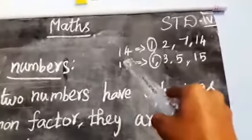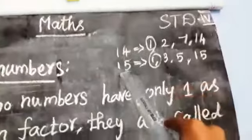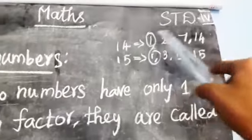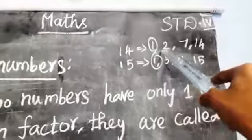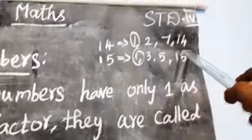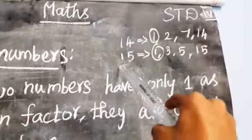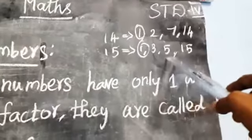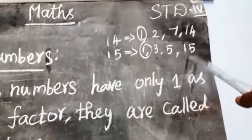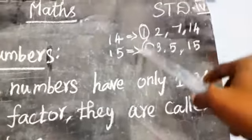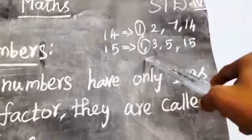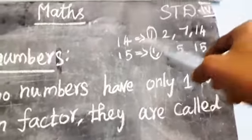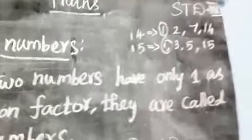I have taken another example: 14 and 15. The factors of 14 are 1, 2, 7, 14. Then the factors of 15 are 1, 3, 5, 15. Now look at — 1 is the common factor. So 14 and 15 are co-prime numbers.